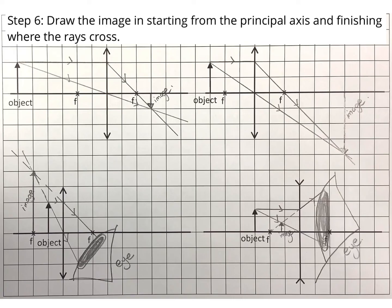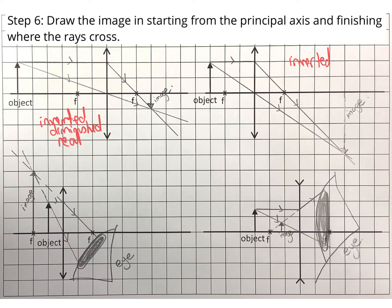This first diagram shows a converging or convex lens producing an inverted image — we can see it's upside down. It produces a diminished image because it is smaller in height than the object, and it is a real image because real rays are crossing. The second diagram is also a converging or convex lens, producing an inverted, enlarged real image — the image is the opposite way up and larger in height than the object, and real rays are crossing.